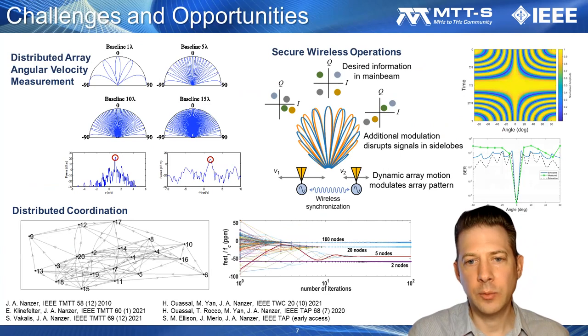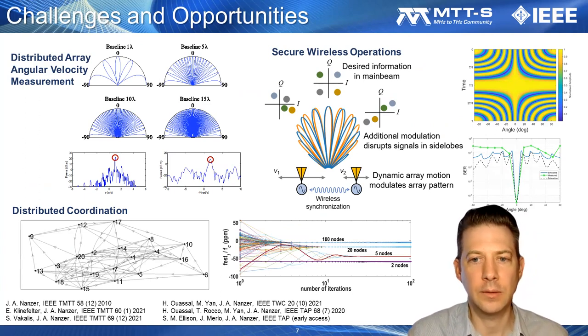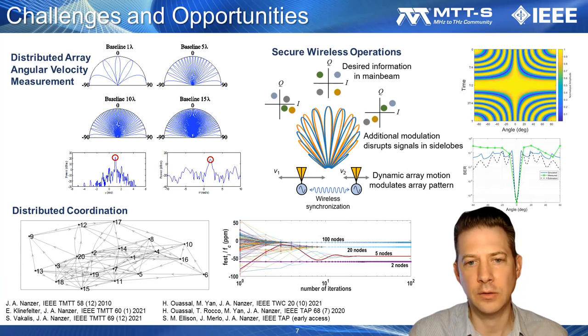The research done by my group and others provides solutions to many of the fundamental challenges in distributed arrays. However, there are main challenges and open questions in the development of distributed phased arrays. For example, distributed arrays are inherently sparse, typically yielding a large number of grating lobes. So dealing with the impact of energy being transmitted in many directions and not just in the desired main beam is a challenge.